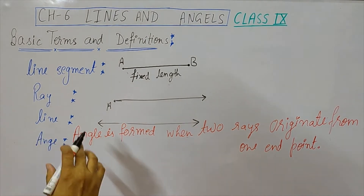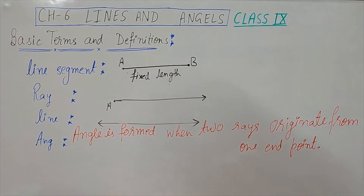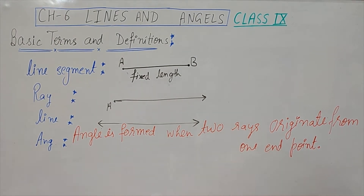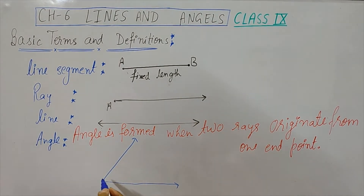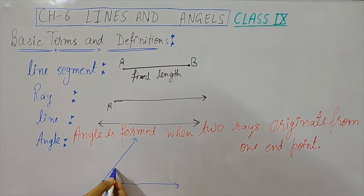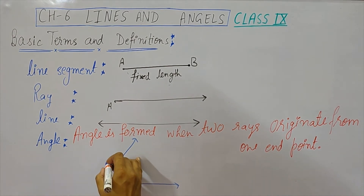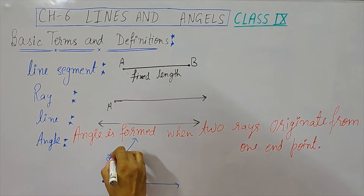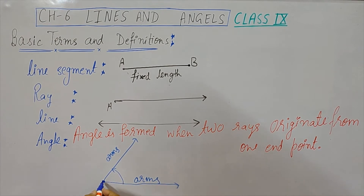An angle is formed when two rays originate from the same endpoint. One ray and another ray both start from the same point. The measurement between these two rays is called the angle. These rays are called the arms of the angle, and the point from where they originate is called the vertex.